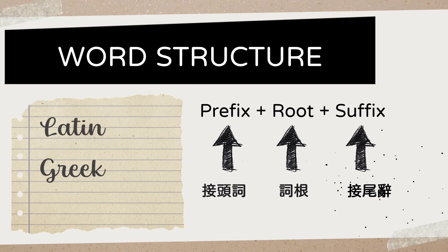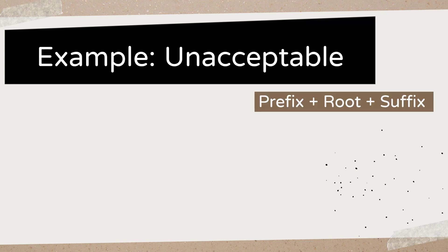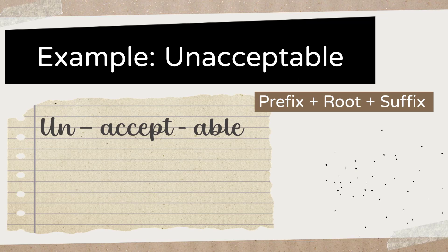So we're going to look at an example. The example here is 'unacceptable.' We all know what unacceptable means, but how do we actually break that down? Looking at unacceptable with the same formula — prefix, root, and suffix — we can break the word into 'un,' 'accept,' and 'able.'